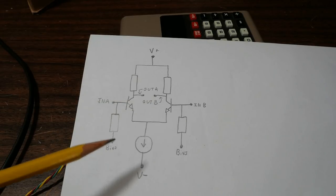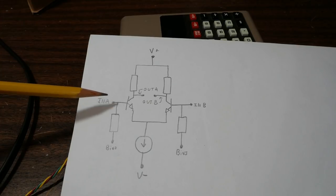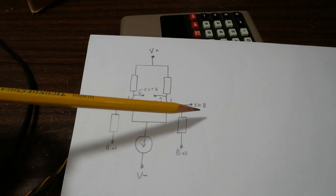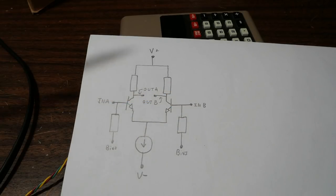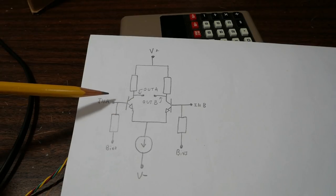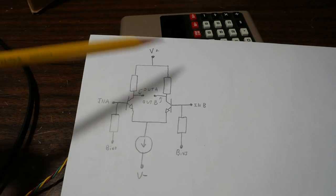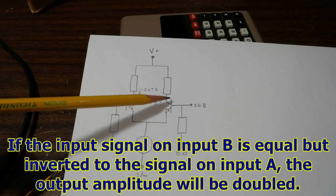Let's say now we have a differential input signal. In other words, we put a signal on input A, and when it's in the positive half cycle, the signal on B is in the negative half cycle. Well, if it's at the same amplitude as the previous example, we'll get a much larger swing on the output because we're driving both sides of the circuit now.